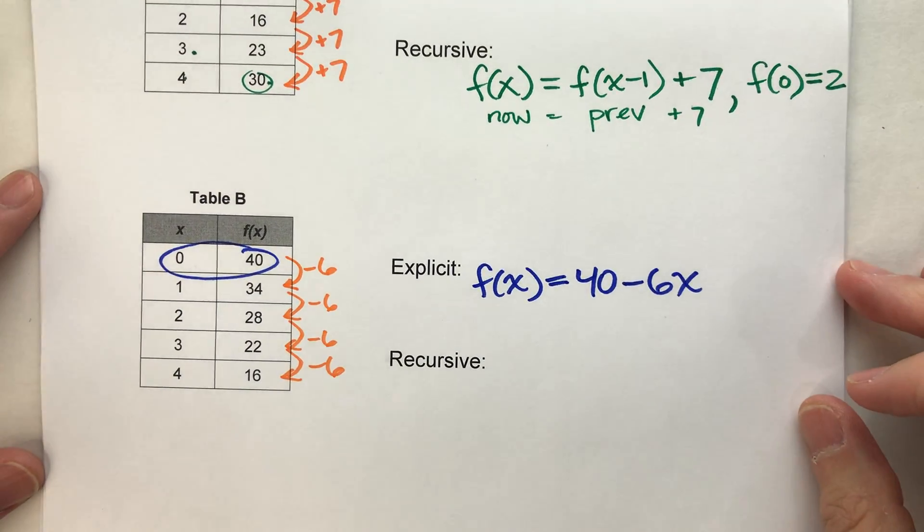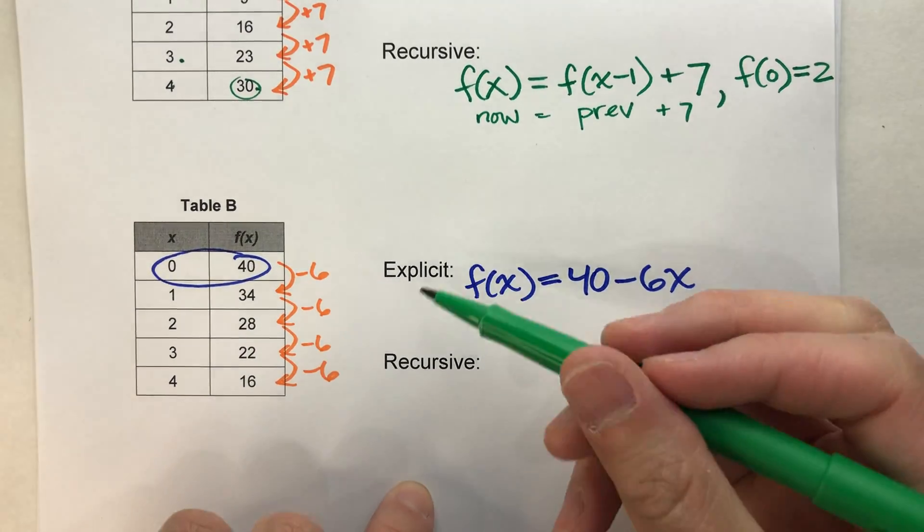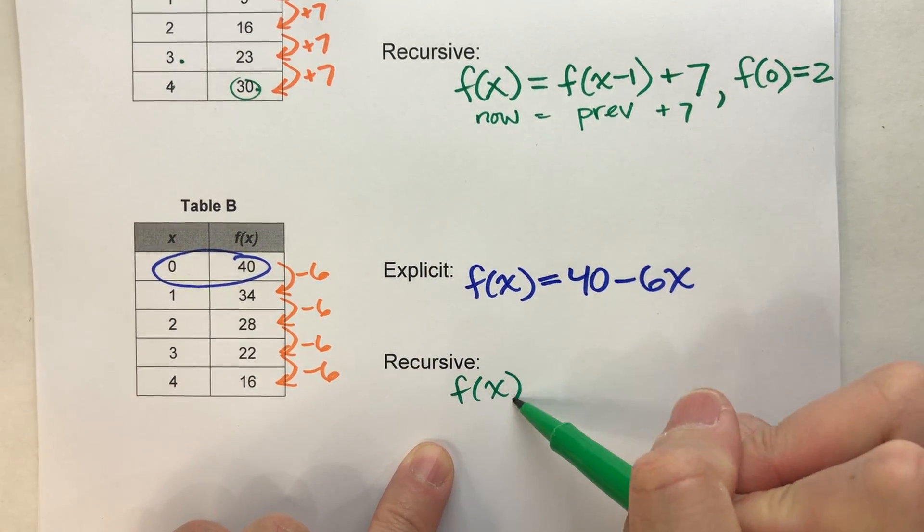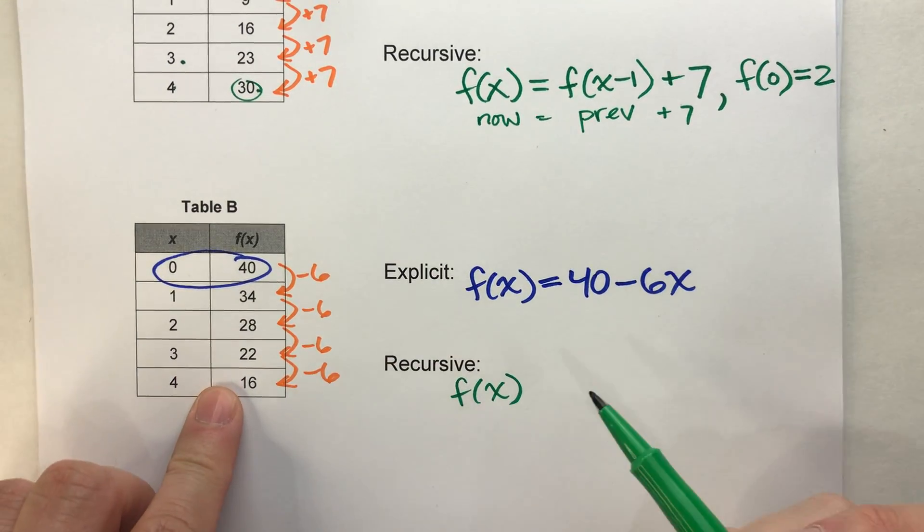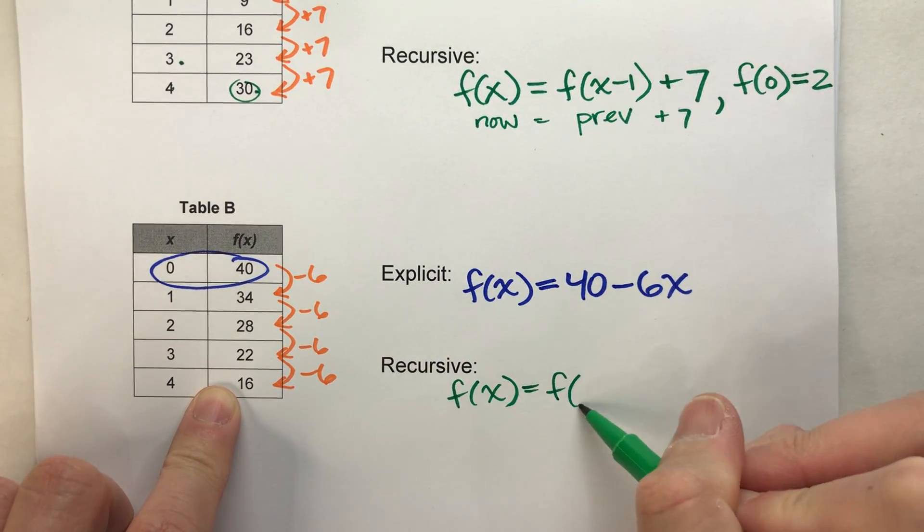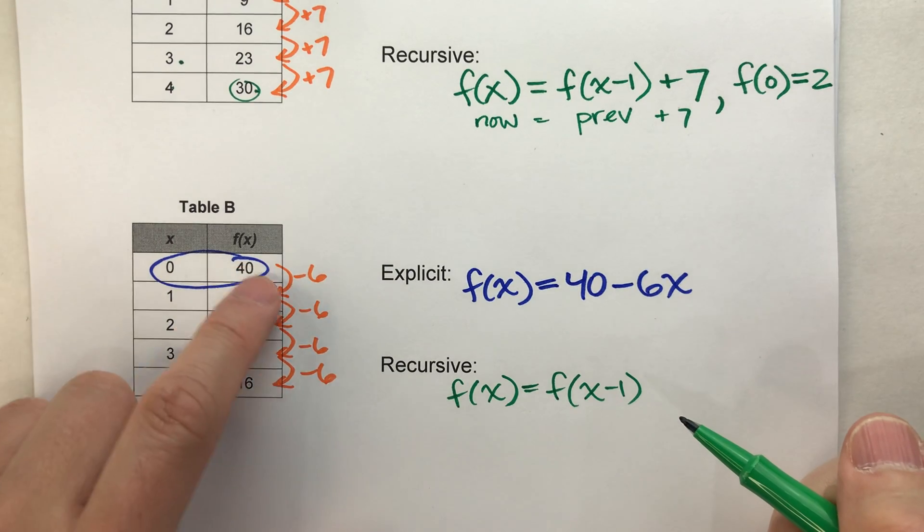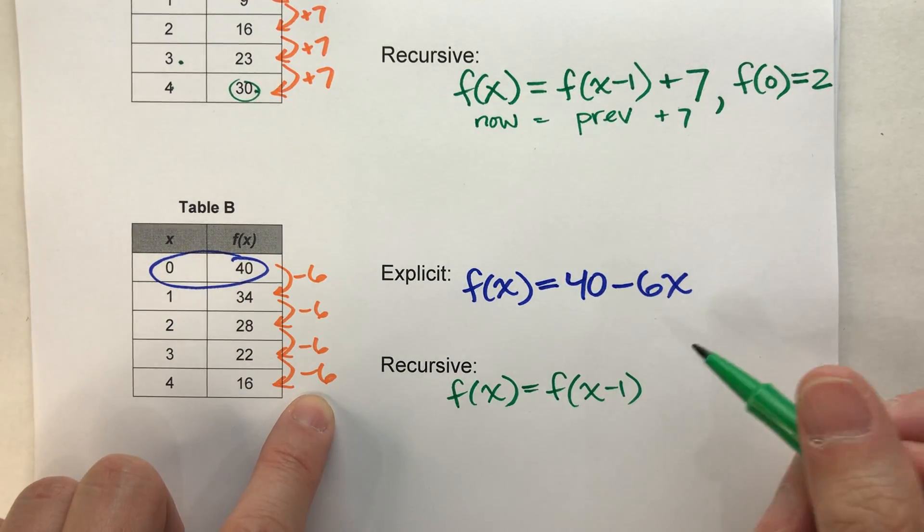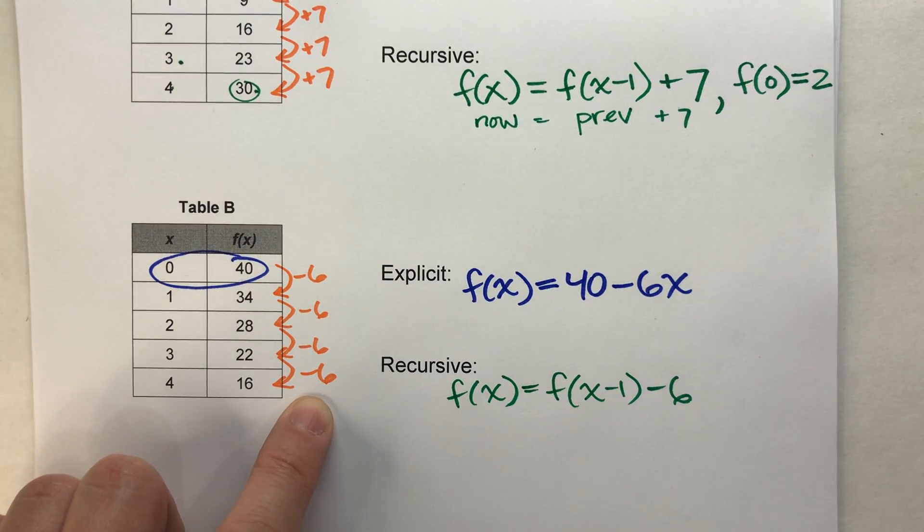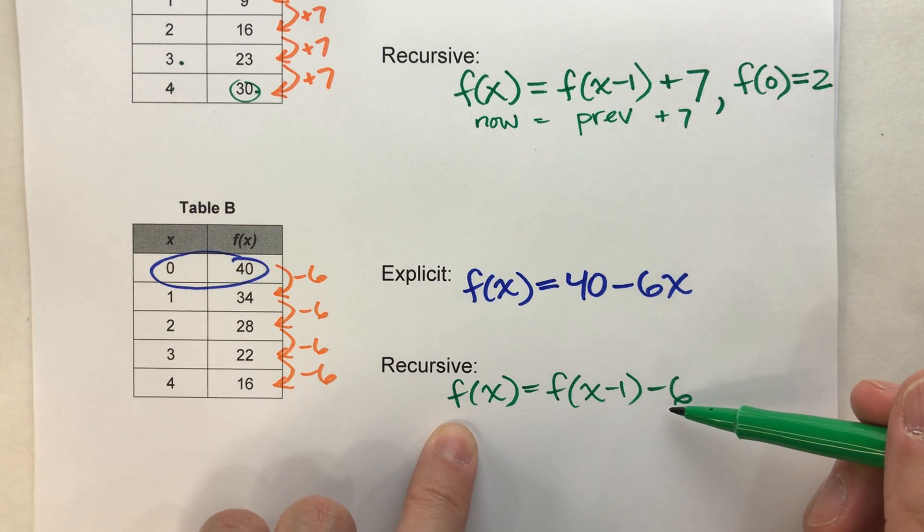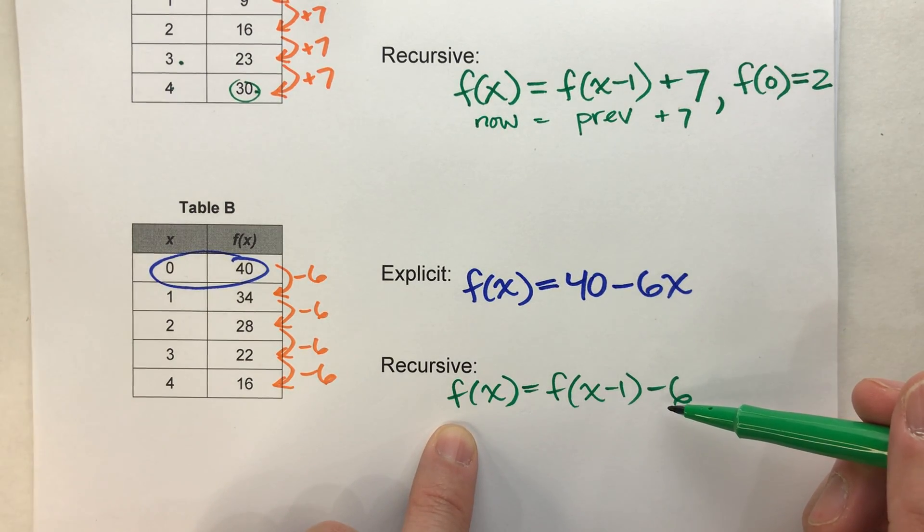Now, for the recursive equation, again, we'll start with f of x. Now, to get any value of f of x, we take the previous value, so f of x minus 1, and then subtract 6 from it. So there's the pattern part of our sequence.